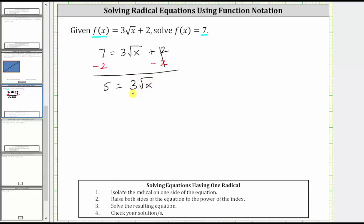The next step is to divide both sides by three to isolate the square root of x. So on the left we have five thirds equals, on the right, three divided by three simplifies to one, we just have the square root of x.